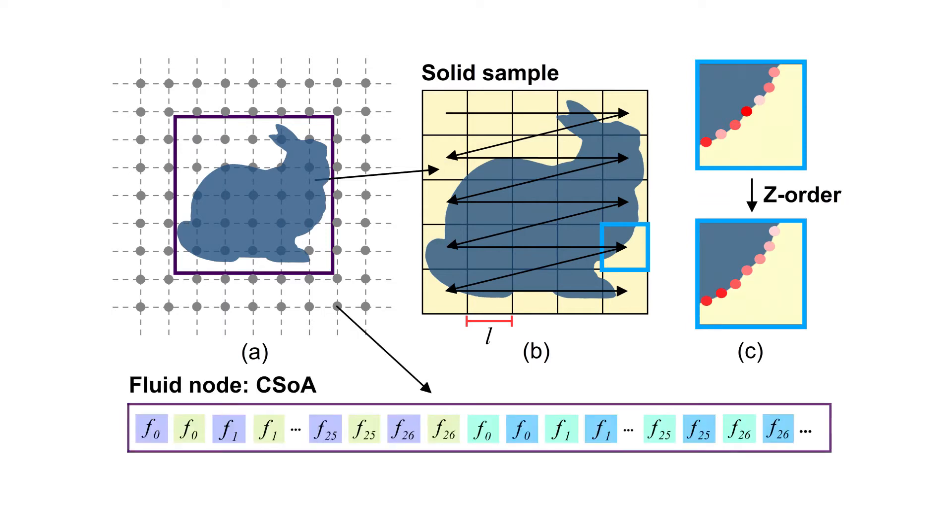The fluid nodes are still organized by CSOA, with an interpolation parameter alpha. Note that L and alpha will be optimized to find optimal data layout.